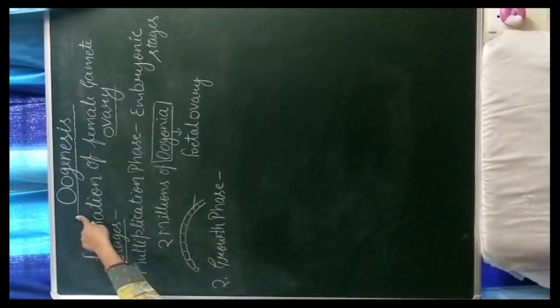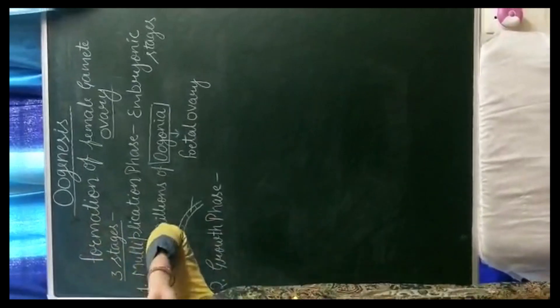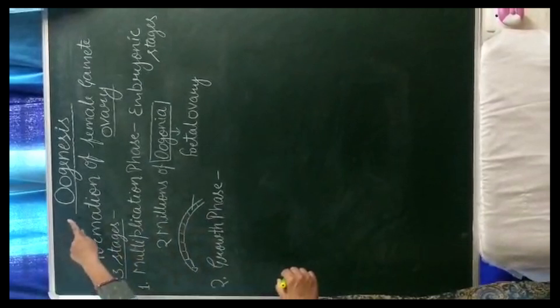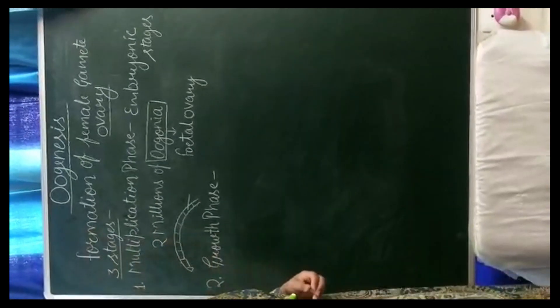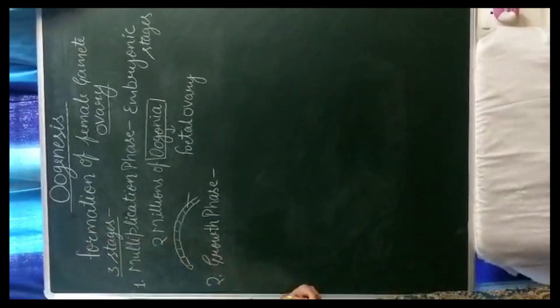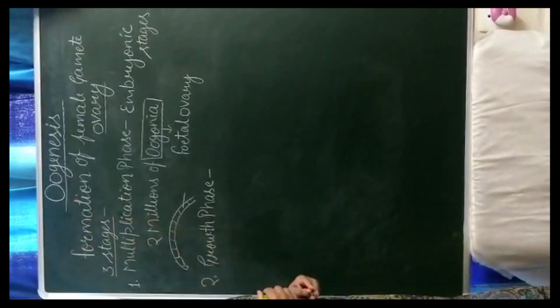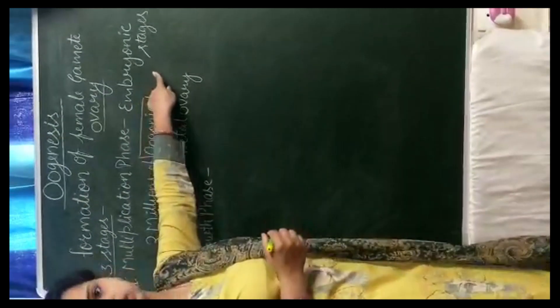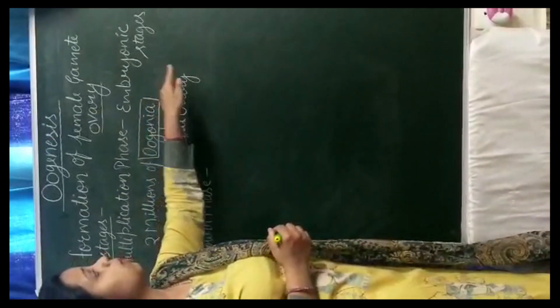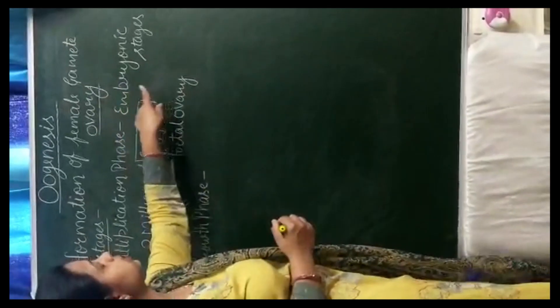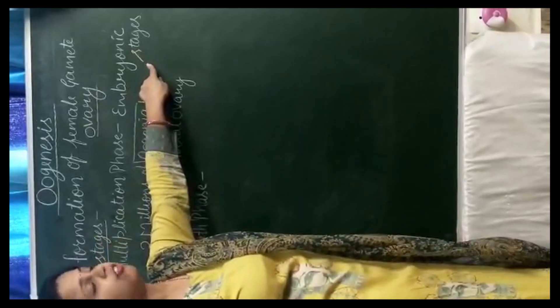Before oogenesis, we studied spermatogenesis. Remember that oogenesis is a more complex process than spermatogenesis. Oogenesis starts during early embryonic stages — means before birth. It starts before birth, during the embryonic development stages in the female fetus.